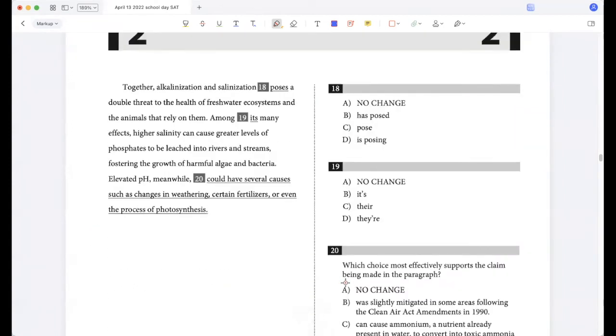Together, alkalinization and salinization pose a double threat, right? Because I'm talking about two subjects here, so it's plural, so not poses, they pose a double threat to the health of freshwater ecosystems and the animals that rely on them. Among its many effects - among their many effects, right? Because again I'm talking about plural. So 'its' is the singular pronoun, this is 'it is,' so this is wrong. 'Their' is the plural pronoun, and this is 'they are,' so this is also wrong. Among their many effects, higher salinity can cause greater levels of phosphates to be leached into rivers and streams, fostering the growth of harmful algae and bacteria.